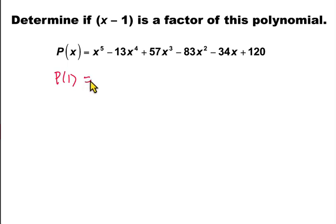P of 1 equals 1 to the fifth minus 13 times 1 to the fourth plus 57 times 1 cubed minus 83 times 1 squared minus 34 times 1 plus 120.